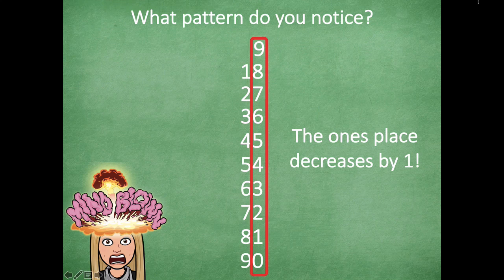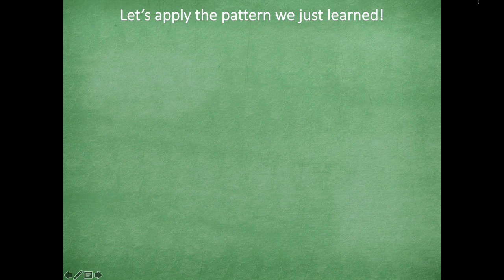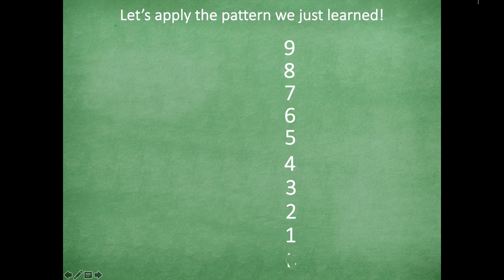So we're looking at patterns and how we can use them to help us multiply. Let's apply the pattern we just learned. I'm going to start in the ones place, starting with nine and counting down: nine, eight, seven, six, five, four, three, two, one, zero.